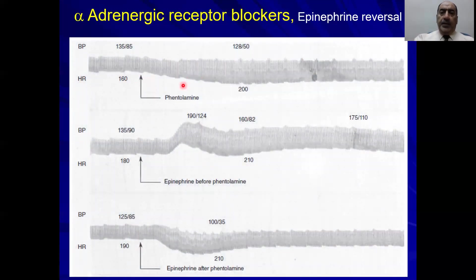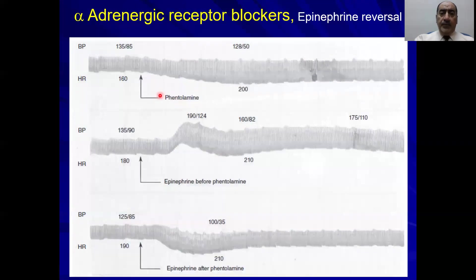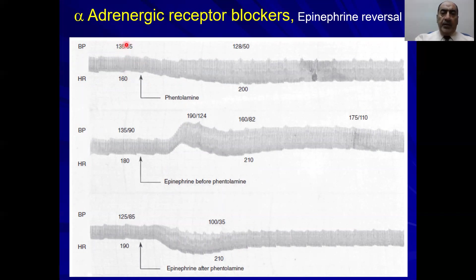Regarding epinephrine reversal, this figure shows the normal response. Remember phentolamine from last time — it's a non-selective alpha blocker. Before using phentolamine, you take the baseline blood pressure and heart rate. After phentolamine, blood pressure decreases and heart rate increases, as mentioned before. So alpha blockers cause reflex tachycardia and hypotension, and they are used as antihypertensives.